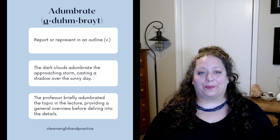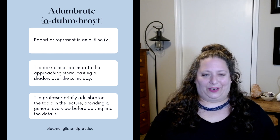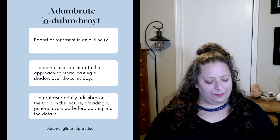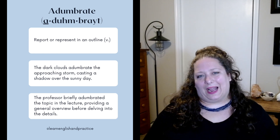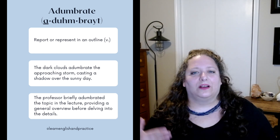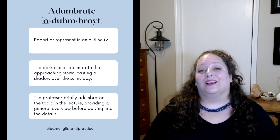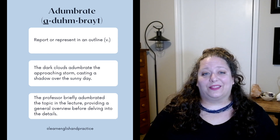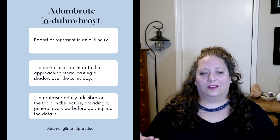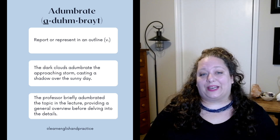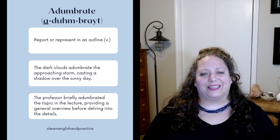Next, we have adumbrate. This means to report or represent in an outline. It's a verb. This means to basically hint at in a way that sketches something out, to give almost foreshadowing of what's to come. Examples: the dark clouds adumbrate the approaching storm, casting a shadow over the sunny day. The professor briefly adumbrated the topic in the lecture, providing a general overview before delving into the details.